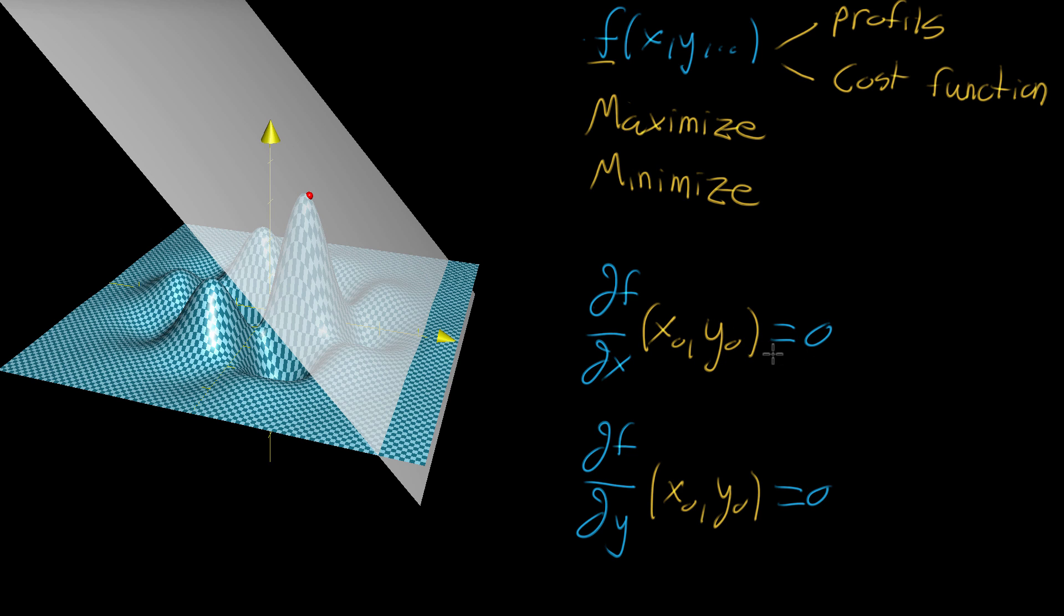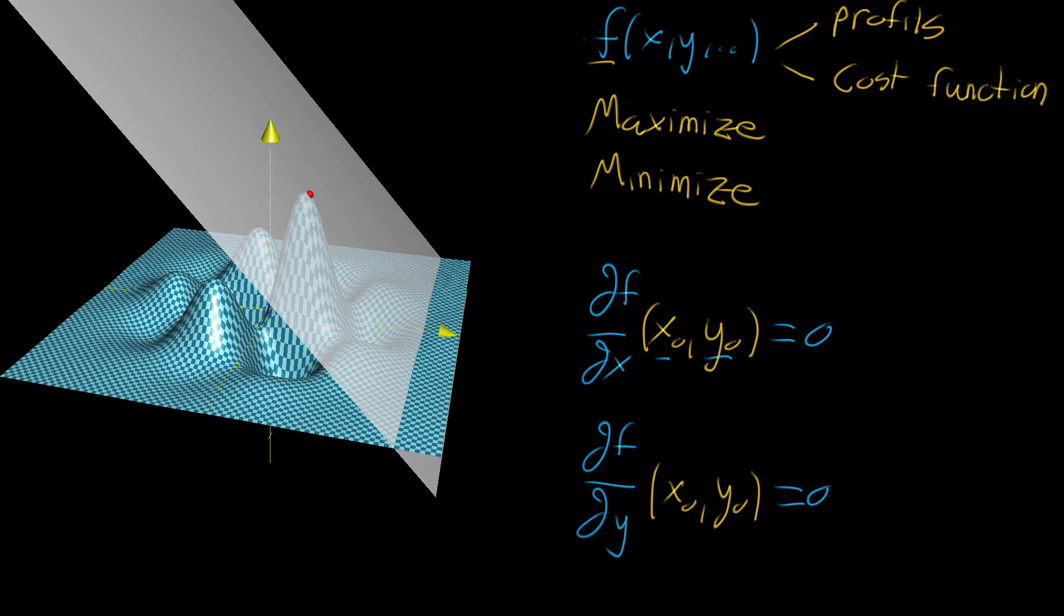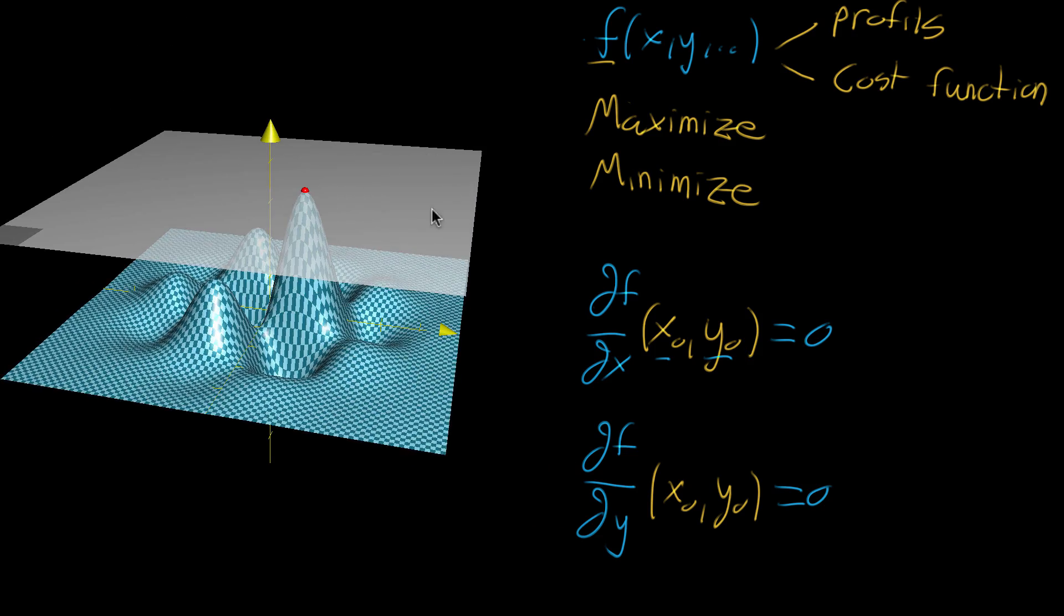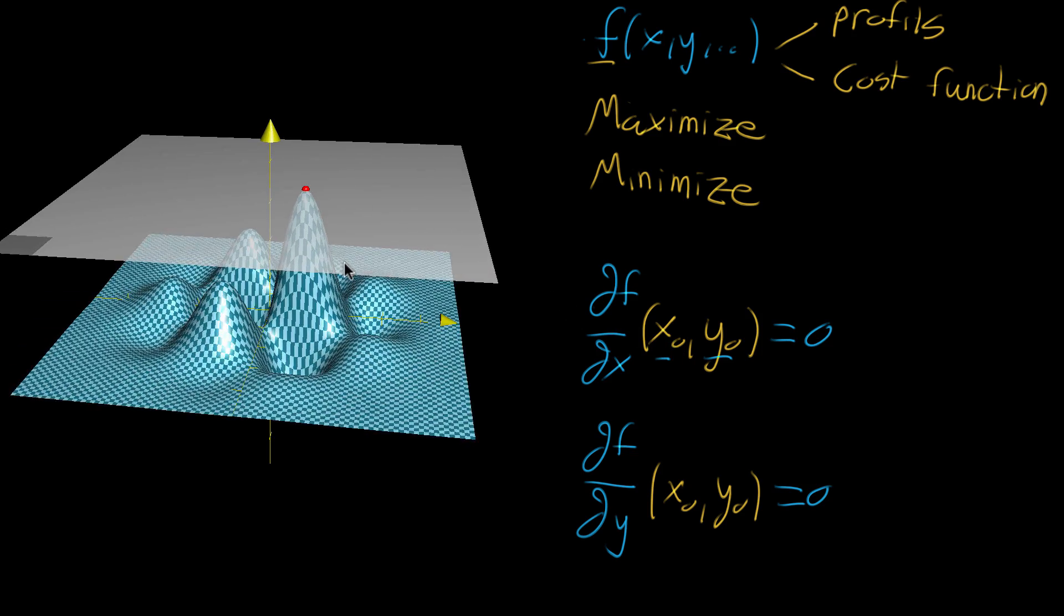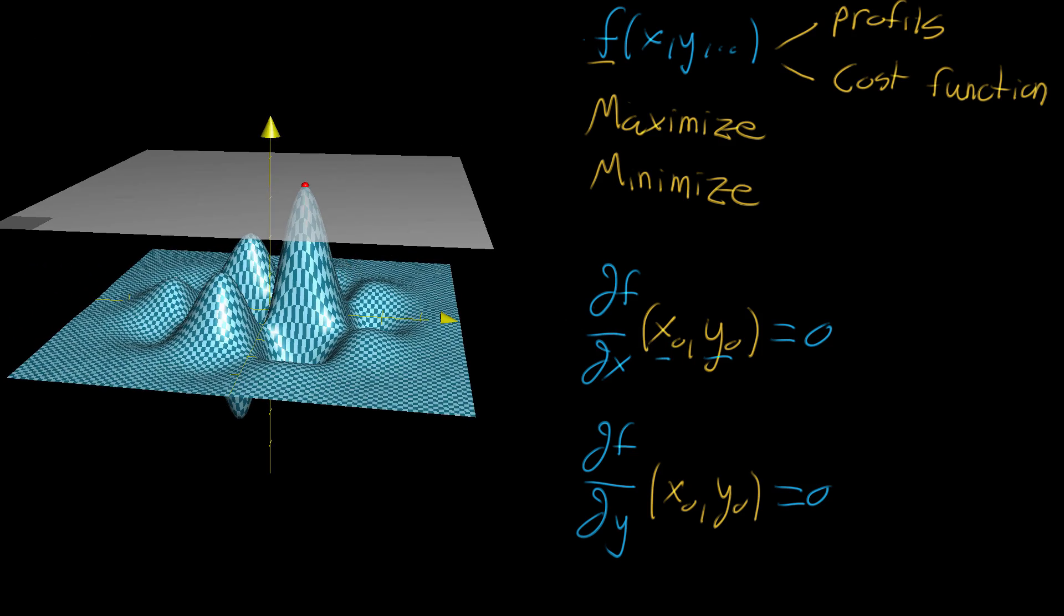So what this gives you here is a system of equations where you're solving for the value of x naught and y naught that satisfies both of these equations. In future videos I'll go through specific examples of this. For now, I just want to give a good conceptual understanding. But one very important thing to notice is that just because this condition is satisfied, meaning your tangent plane is flat, just because that's satisfied doesn't necessarily mean that you've found the maximum. That's just one requirement that it has to satisfy.